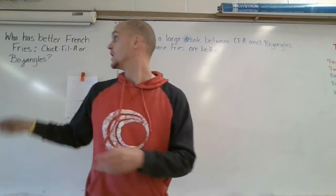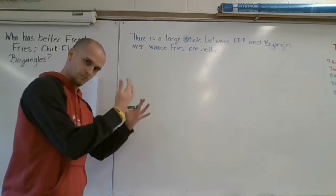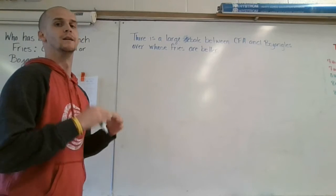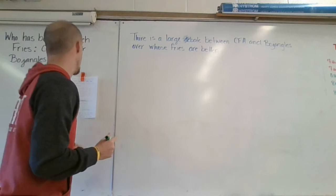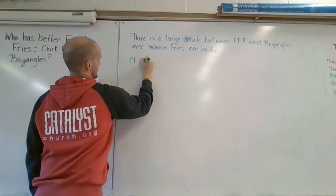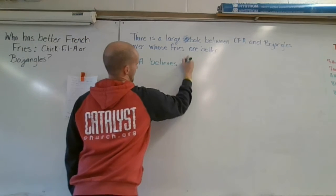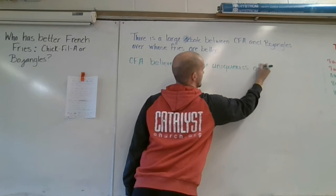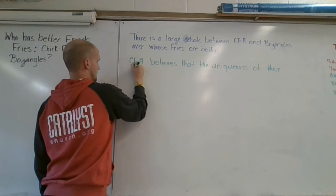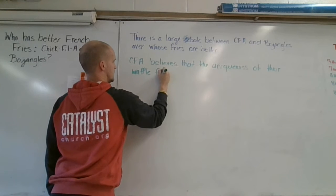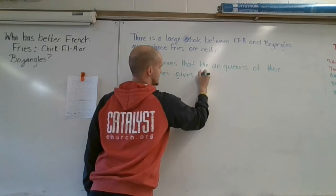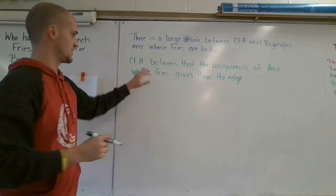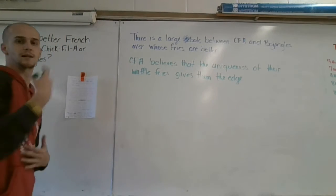Now the second question was: objectively, what are both arguments? You're going to present in a simple statement what both arguments are, in an objective way — without showing your opinion, without showing which side you're on, just state what each side's argument is. So: 'Chick-fil-A believes that the uniqueness of their waffle fries gives them the edge.' We've presented side A.